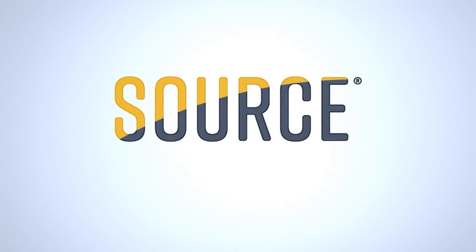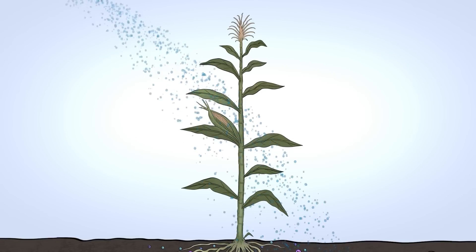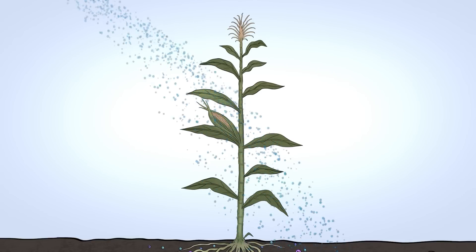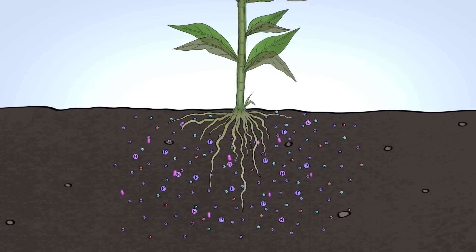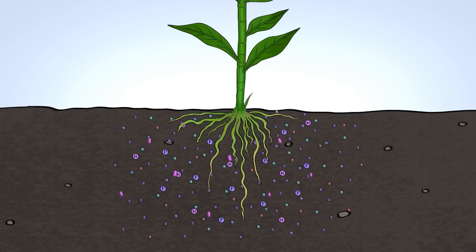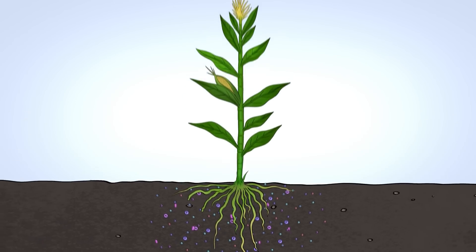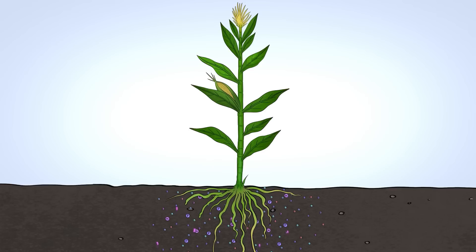One way of improving soil health is by using products like Source that activate the soil microbiome. Source is a foliar-applied chemistry that acts like caffeine, stimulating your soil microbes, creating a more active soil microbiome. With a more active microbiome, the root ball gets bigger and more robust, and the plants get access to more micronutrients.